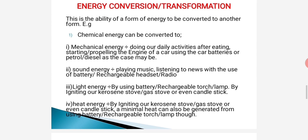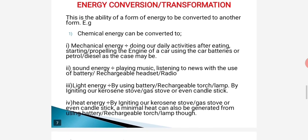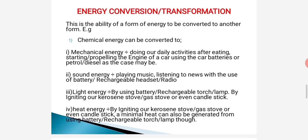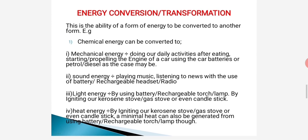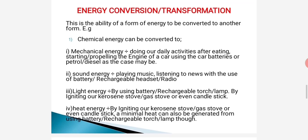Let's look at how heat energy is gotten from chemical energy. When we ignite our kerosene stove, gas stove, or candlestick, heat energy is generated — the whole environment is heated up. We can also generate heat by using a battery or rechargeable torch. When you switch on the torch, feel the bulb side — that environment is always hot. That is heat energy being generated from chemical energy.